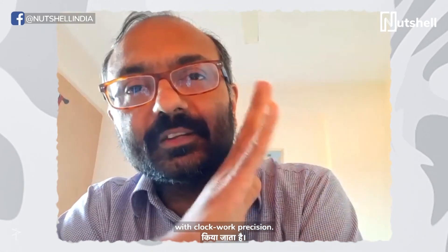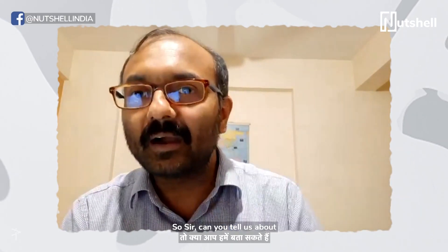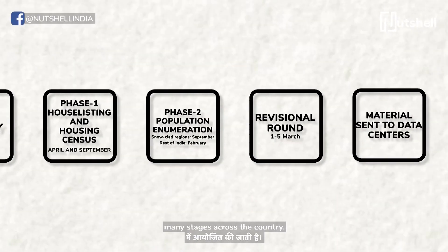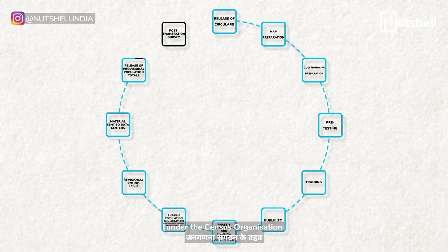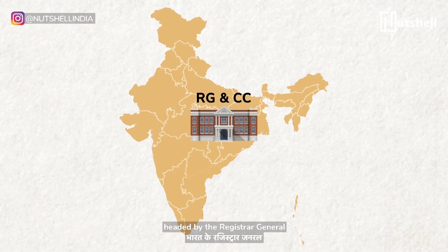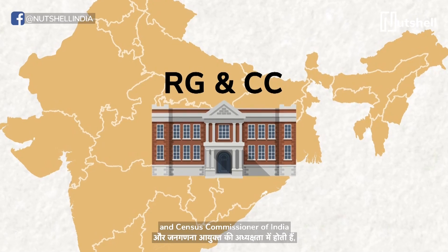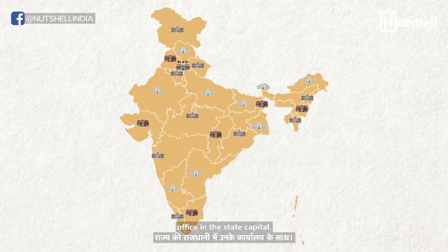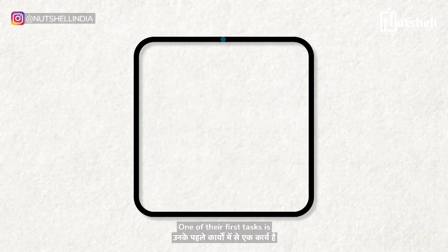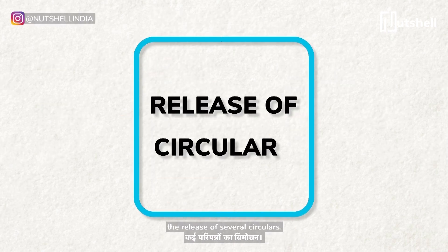To get a better understanding of the whole thing, we talked to Professor Vikas, who has been researching and writing extensively about the census. The census is conducted in many stages across the country. All these processes take place under the census organization, headed by the Registrar General and Census Commissioner of India, whose office is in New Delhi. Each state gets a Director of Census Operations with their office in the state capital. One of their first tasks is the release of several circulars.